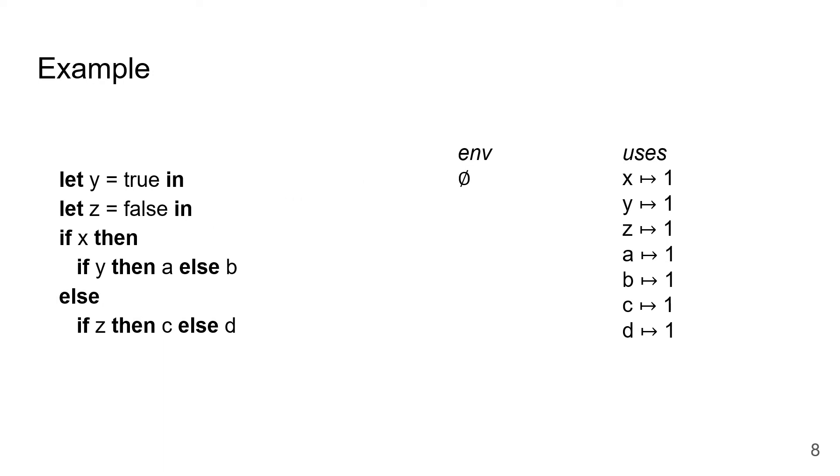Here's an example which illustrates how these implementation strategies can be used to optimize the term shown on the left. To start, the environment is empty, and uses maps each variable that occurs in the term to the number of times it's used. In this case, there are seven variables, x, y, z, a, b, c, and d, and each is used once. The first thing we encounter is a let binding from y to true. So, we add this binding to the environment and make a recursive call. At the recursive call, we encounter a let binding for z, which we can then add to the environment and make a recursive call on the if-then-else.